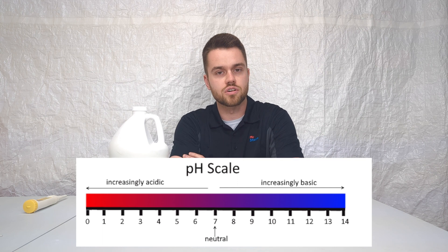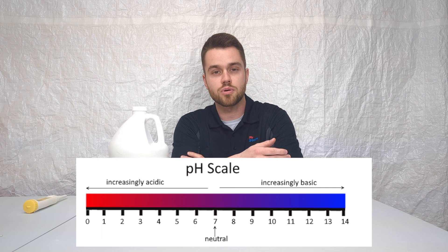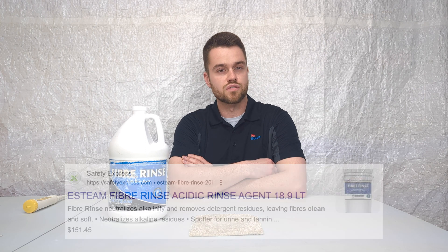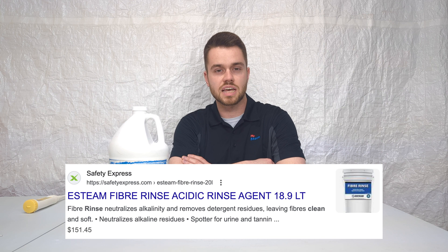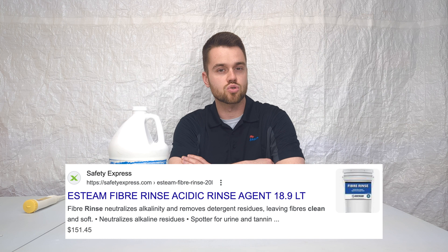For example, if you're dealing with urine, it has a pH of 6, so you'll need to counteract that with a pre-spray that has a pH of around 8. This helps break the chemical bond that the stain has with the carpet fibers. Conventional wisdom is that you'll need to rinse your alkaline pre-spray out with an acidic rinse to leave the carpet in a neutral state.